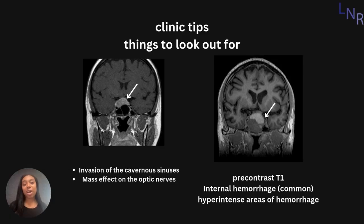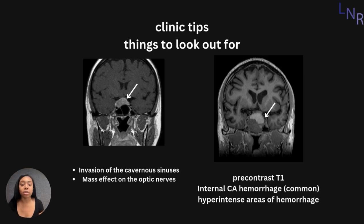Another thing to look out for on pre-contrast T1 imaging is internal hemorrhage. This will look like a hyper-intense area of hemorrhage, due to the small arteries in the tumor itself, as indicated on the right side of the screen with the arrow in the hyper-intense area of hemorrhage.